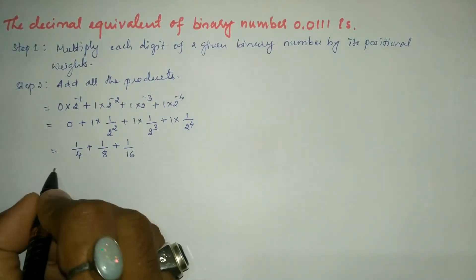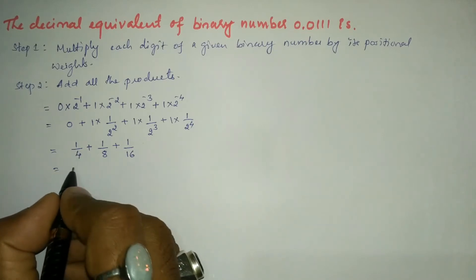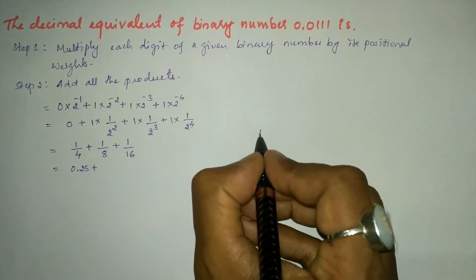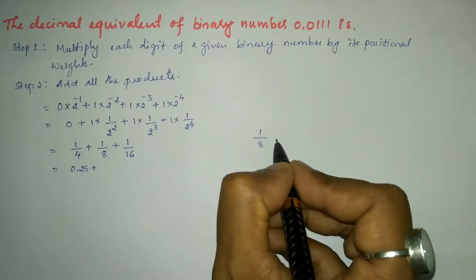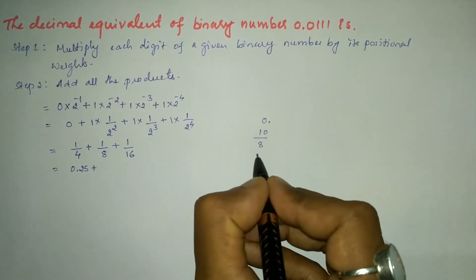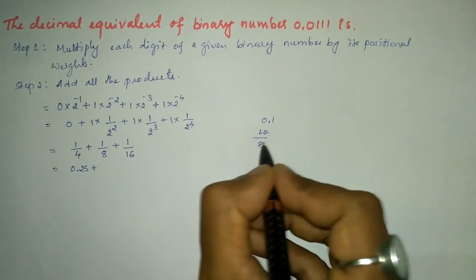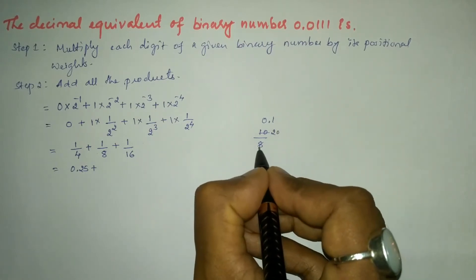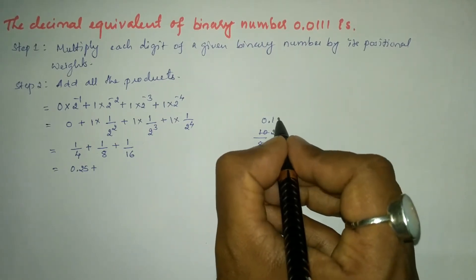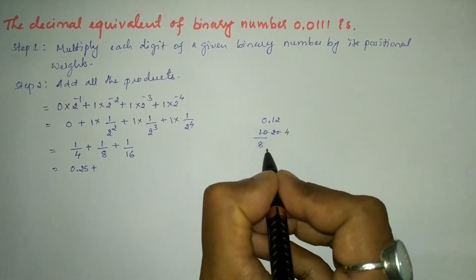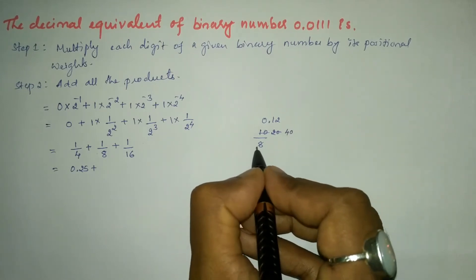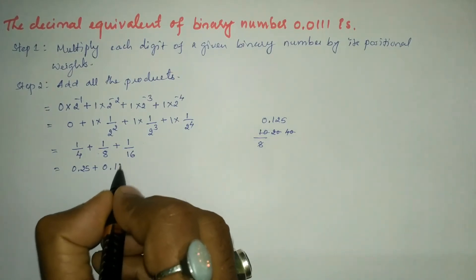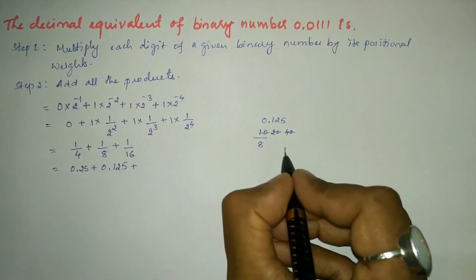Now, 1 divided by 4 equals 0.25. For 1 divided by 8: 1 cannot be divided by 8 so we take 0 point, making it 10. Eight ones are 8, remainder 2, making it 20. Eight 2s are 16, remainder 4, making it 40. Eight 5s are 40, so 1 divided by 8 equals 0.125.